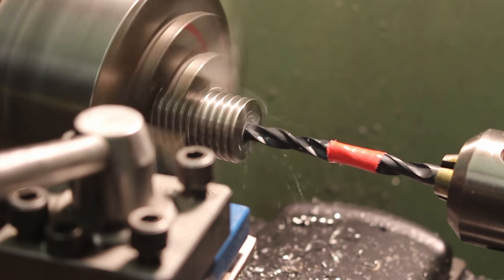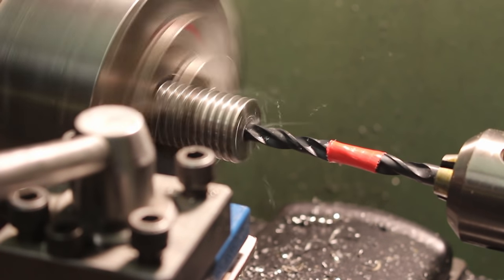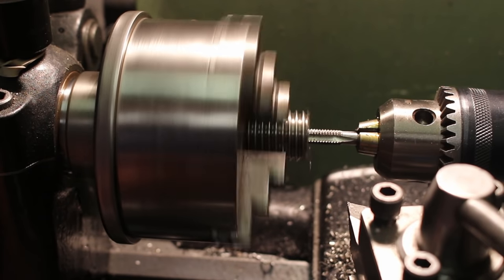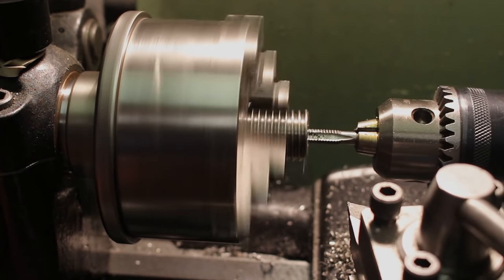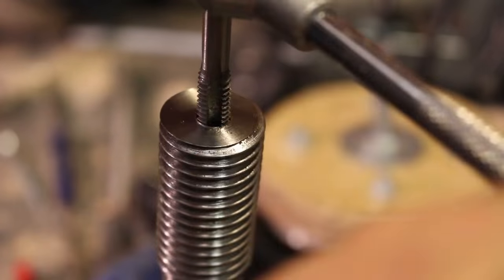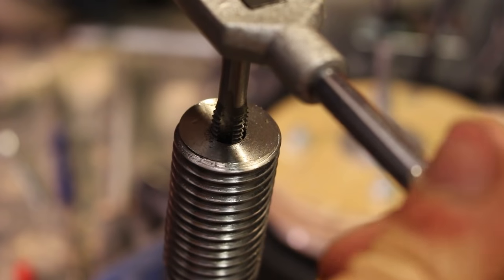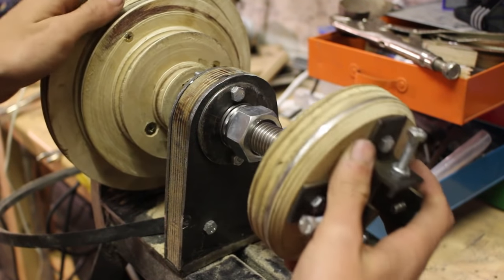I then drilled a blind hole in the center of it, not very deep in, and then tapped it for an M8 thread. This is just because most of my homemade lathe attachments have an M8 thread so I can just screw them directly into the center of the headstock now, which is really useful.